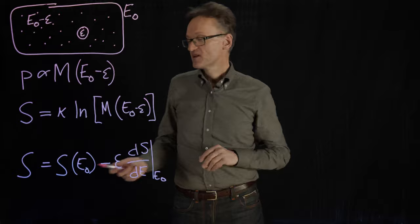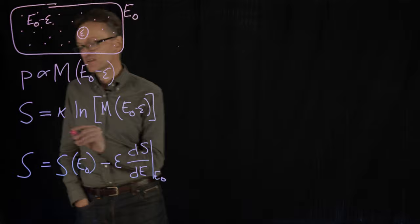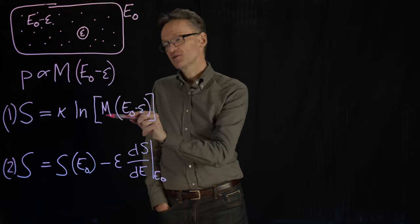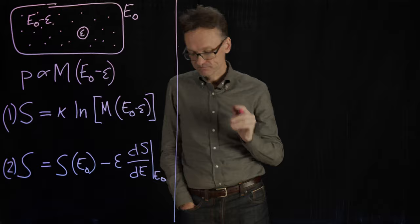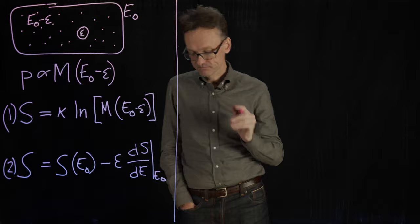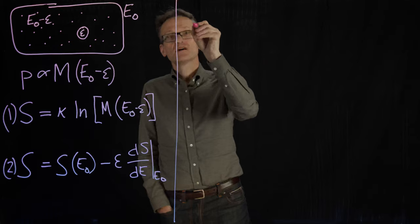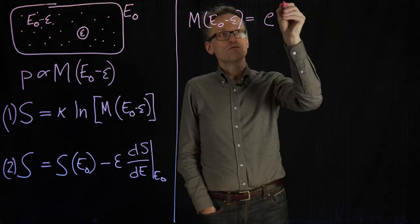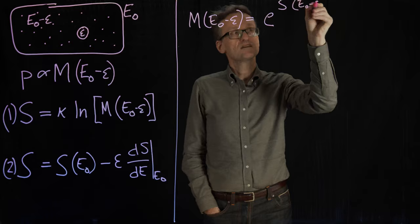Let me call this something that let's say that the first one here was equation 1 and the second one was equation 2. I'm now going to solve for m because I really wanted m right. I'm going to solve for m in equation 1. But instead of saying s, I can use equation 2. So where will that lead us? Well, this is easy. I'll take s divided by kappa and then take the exponential. So that m of E0 minus epsilon is equal to e raised to s of E0 minus epsilon divided by kappa. That's just the plain definition.